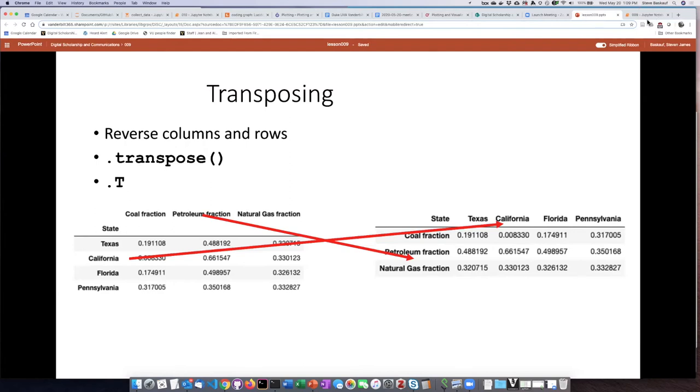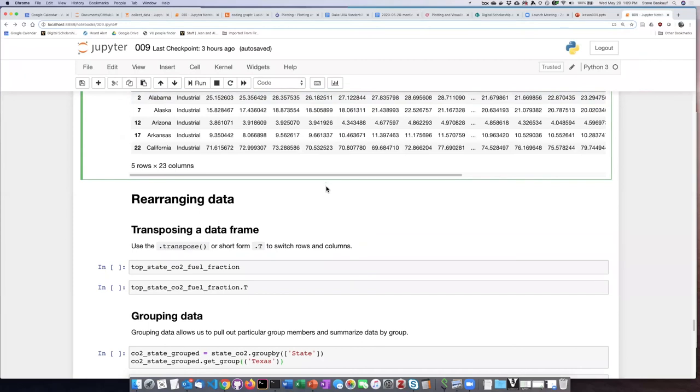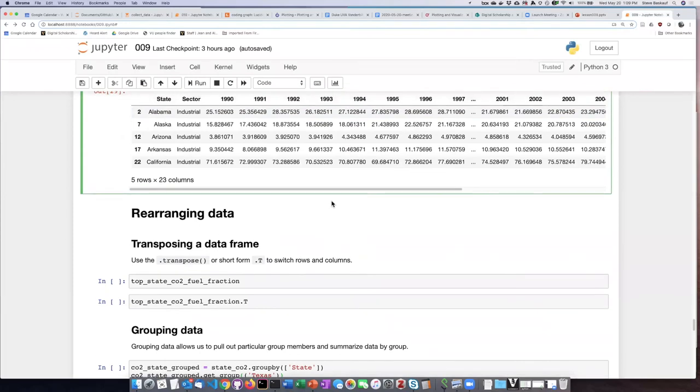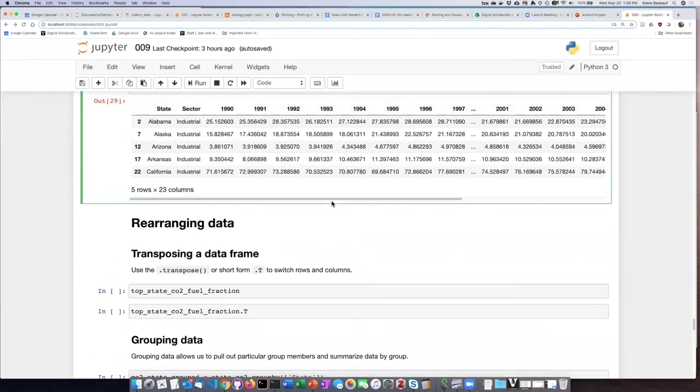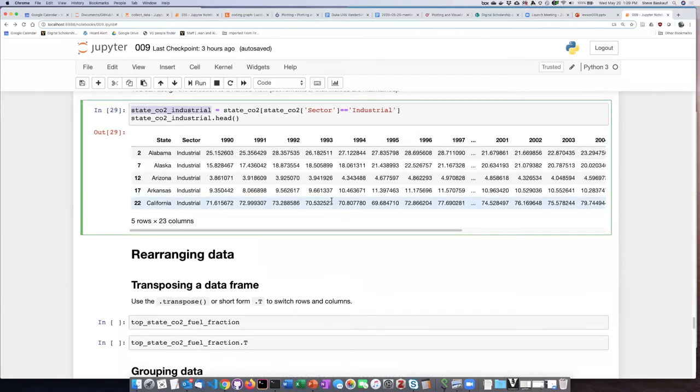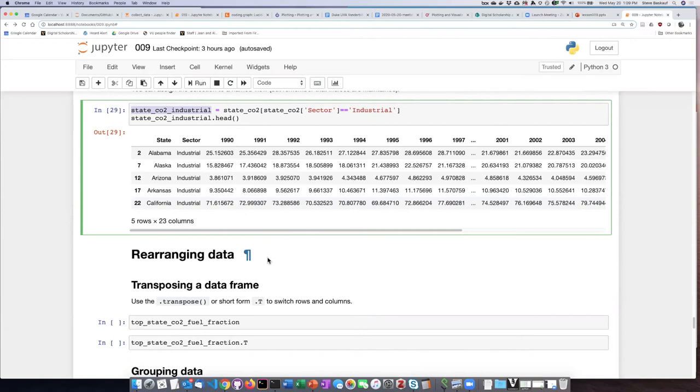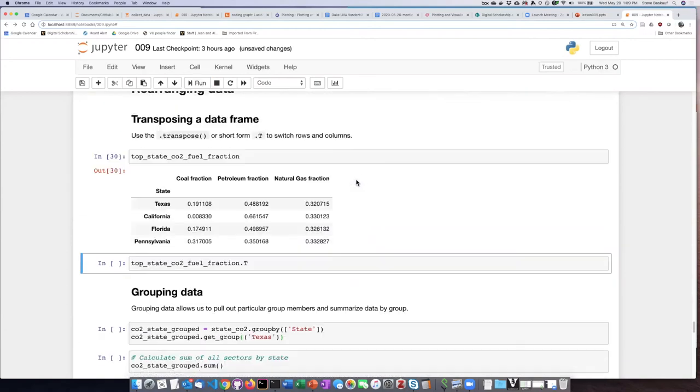If we take a look at this data frame that we created before, which was the state_CO2_fuel_fraction, we can see that it looks like this.